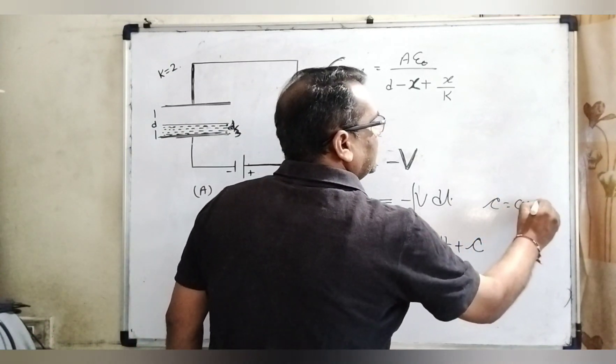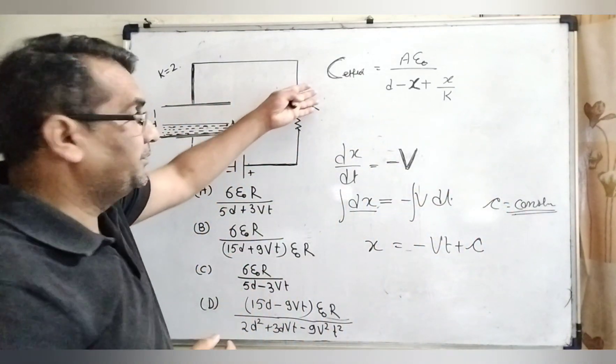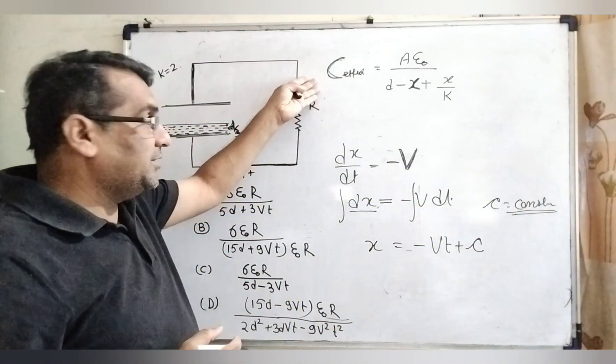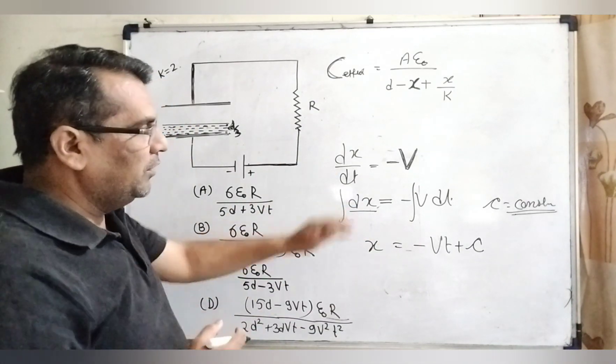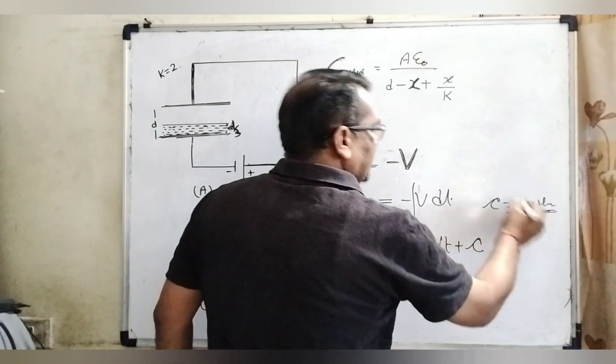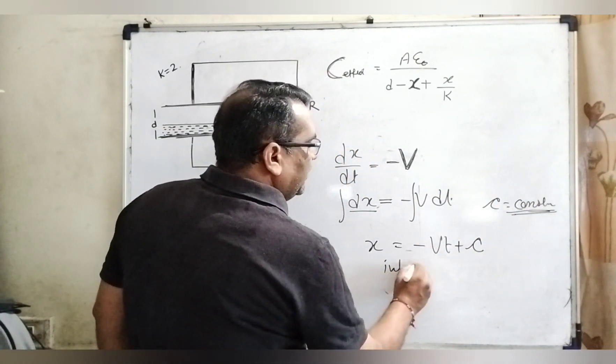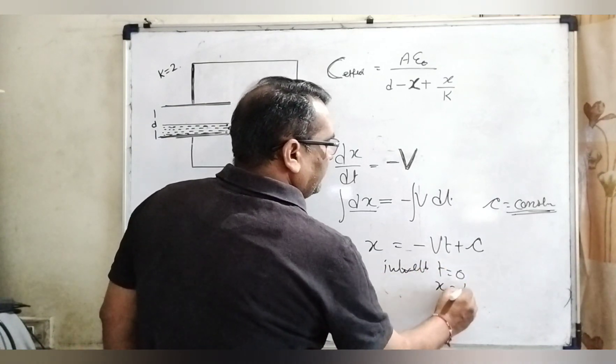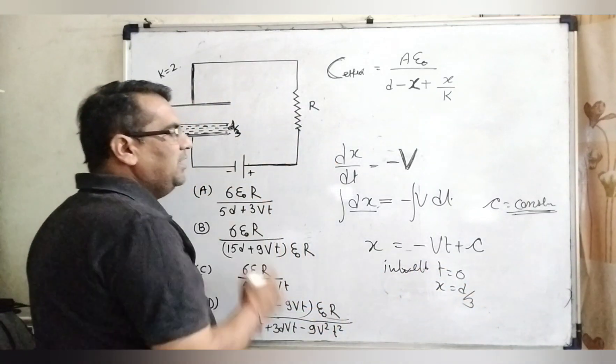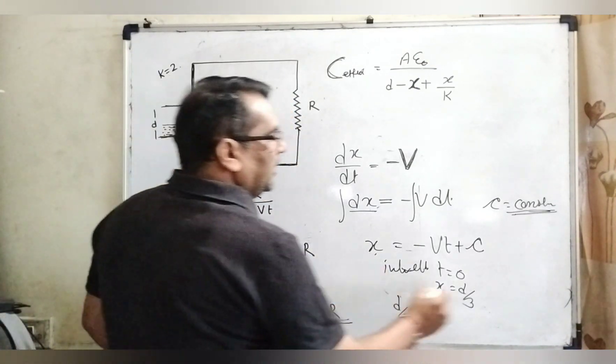Small c is constant because capital C is a capacitor, illustrated by capacitor. We cannot put K because K is already given K equal to 2. So therefore, we have illustrated small c is a constant. Now, initially t equal to 0, that time x we have using d by 3 because it is given. So d by 3 equal to constant.